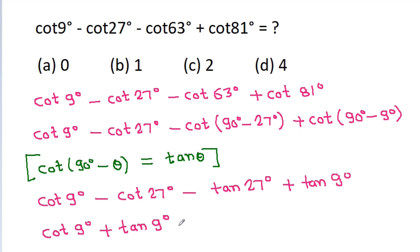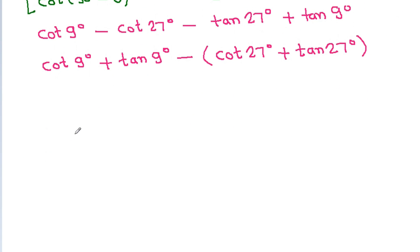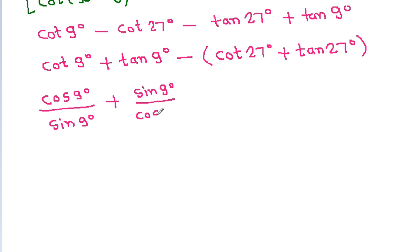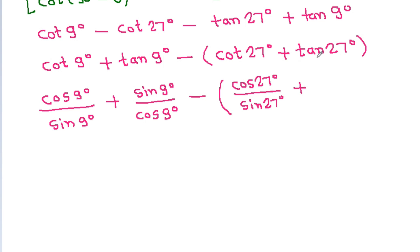Taking minus common, we group as (cot 9° + tan 9°) minus (cot 27° + tan 27°). We write cot 9° = cos 9°/sin 9° and tan 9° = sin 9°/cos 9°, and similarly cot 27° = cos 27°/sin 27° and tan 27° = sin 27°/cos 27°.